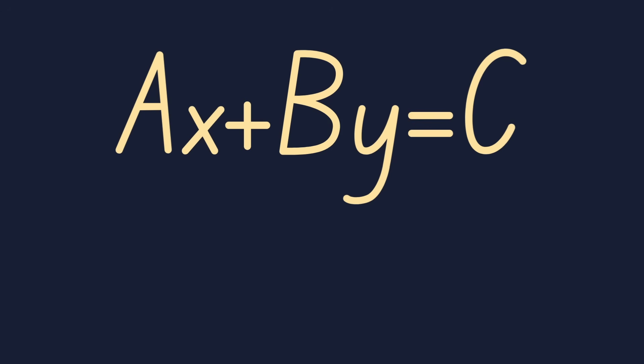Standard form being AX plus BY equals C, where X and Y are some sort of items, A and B are values attached to those items, and C is our total.